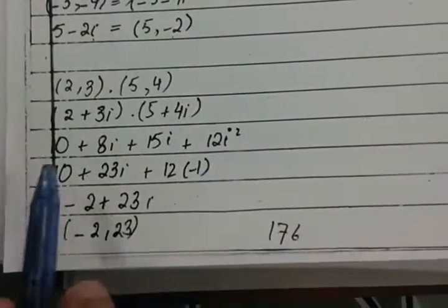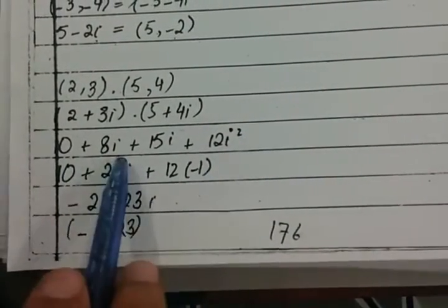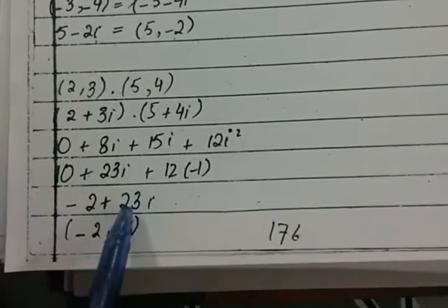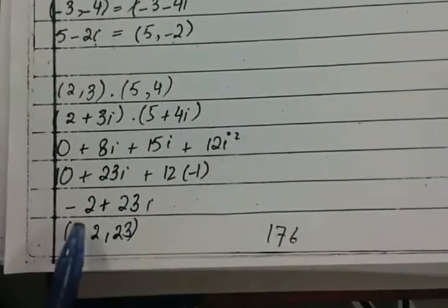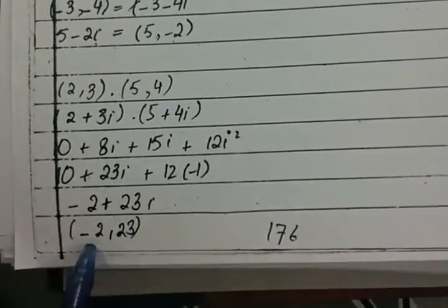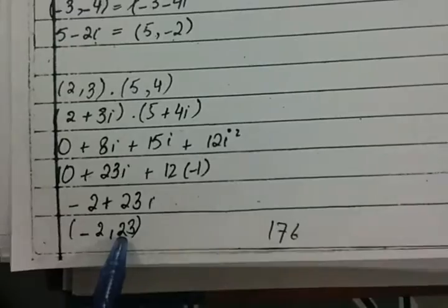So 10 minus 12 gives minus 2, and 8 plus 15 gives 23. Therefore the real part is minus 2 and the imaginary part is 23.